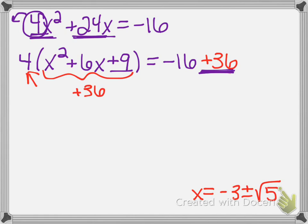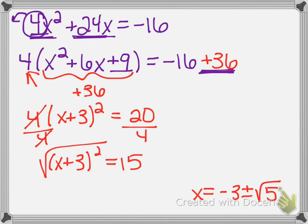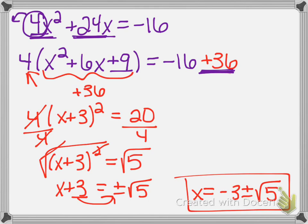Now I rewrite in vertex form: I have the 4 out in front, the parentheses factor as x plus 3 squared, and the constants on the right add up to 20. The very first step is to divide both sides by 4, giving x plus 3 squared equals 5 — sure enough, the same value as before. Then square root both sides to get plus or minus the square root of 5, and subtract 3 to get x equals negative 3 plus or minus the square root of 5. The same answer either way.